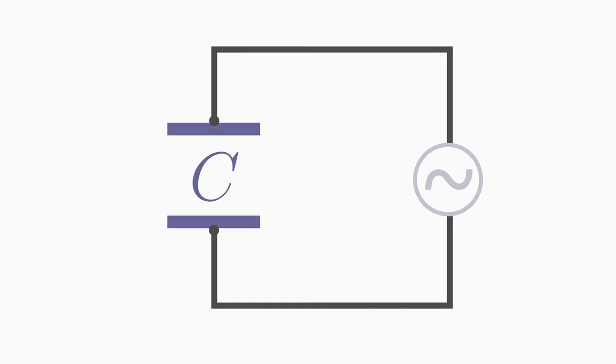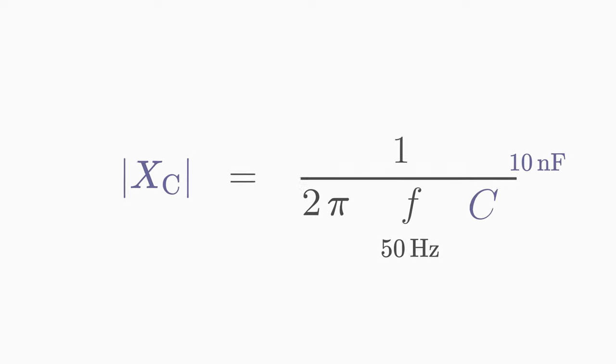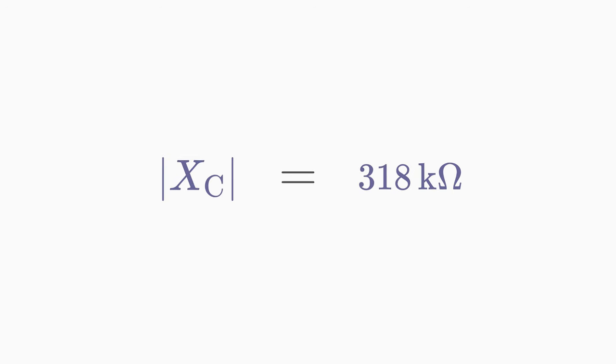Let's make an example. You apply a voltage to a capacitor with a capacitance of 10 nF. The 230 volts RMS voltage has a frequency of 50 Hz. Insert the values. Thus, the capacitive reactance is 318 kOhms.